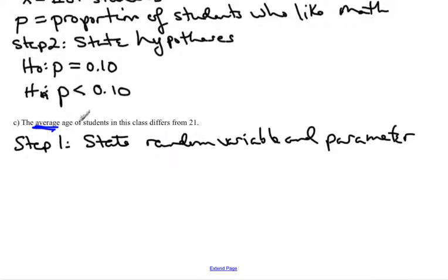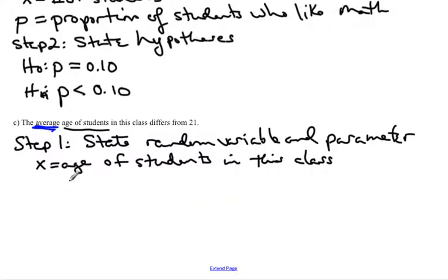So again we're looking for what did we measure. Again you can't measure an average but you can measure ages and then calculate an average. So in this case our random variable would be the age of students. Now be specific, it is the age of students in this class. So a lot of times we're very wordy with what we're trying to actually do here.